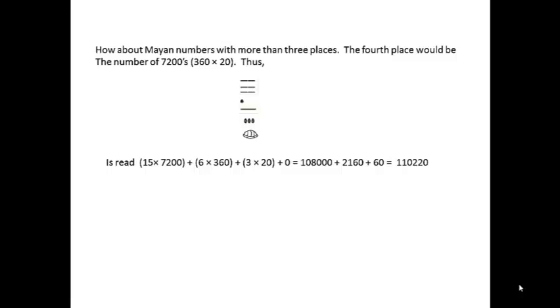This four place number here, which is 15 in the fourth place, six in the third place, three in the second place, and zero in the first place, would be 15 times 7,200 plus six times 360 plus three times 20 plus zero, and that all adds up to 110,220.